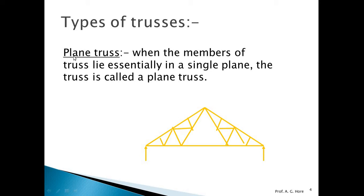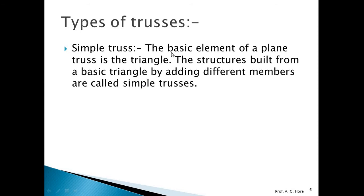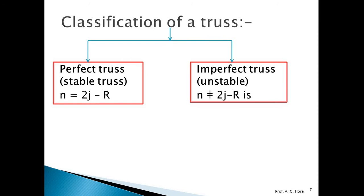A rigid truss is one that does not collapse when loaded — the structure does not collapse because of the applied load or weight. A simple truss is based on the triangle as its basic element; if the truss is formed by triangles, it is known as a simple truss.